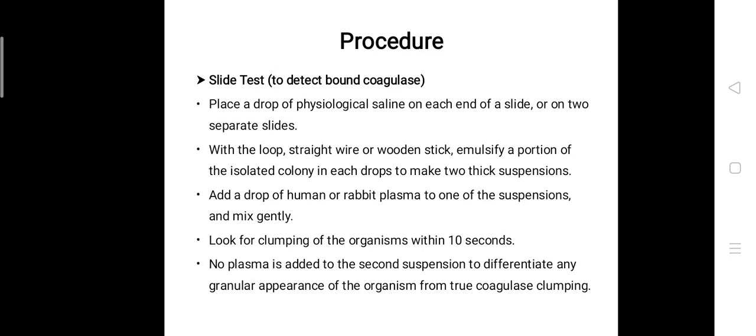Draw a circle on the underside of the slide designating the area where the test will be performed. Label one 'T' and other for the normal saline control. Place a drop of normal saline on each end of a slide or on two separate slides. With the help of the inoculating loop or straight wire or wooden stick, emulsify a portion of isolated colonies in each drop to make a thick suspension.